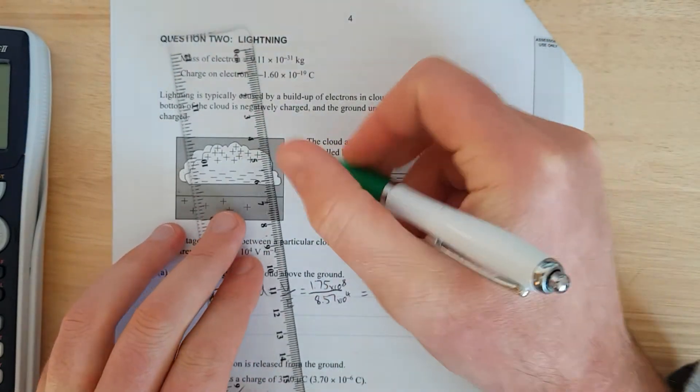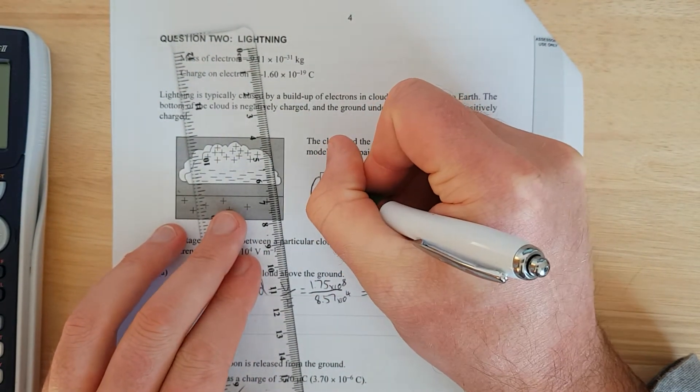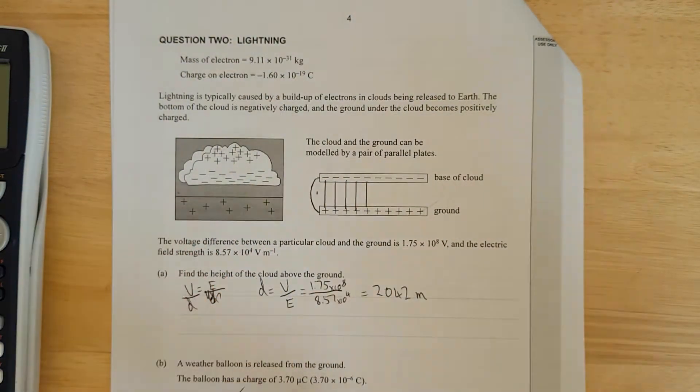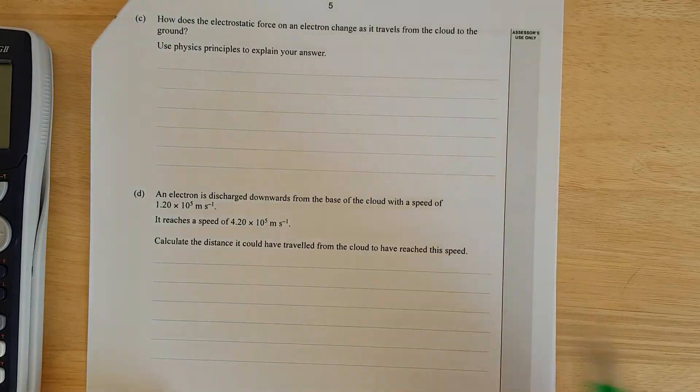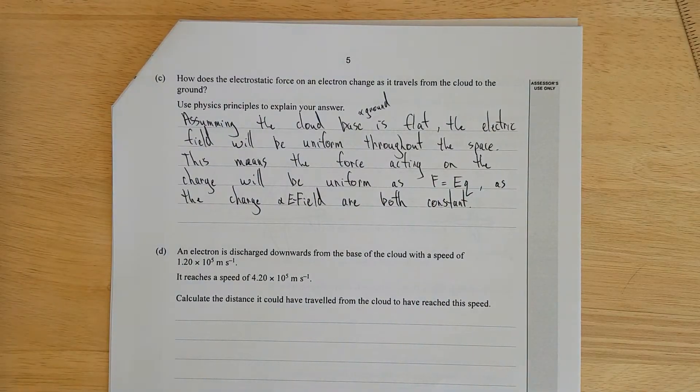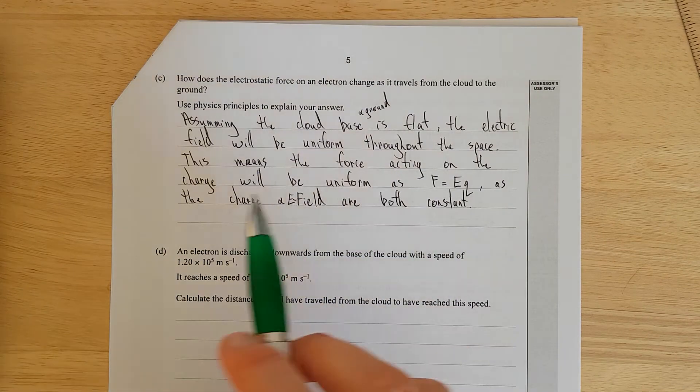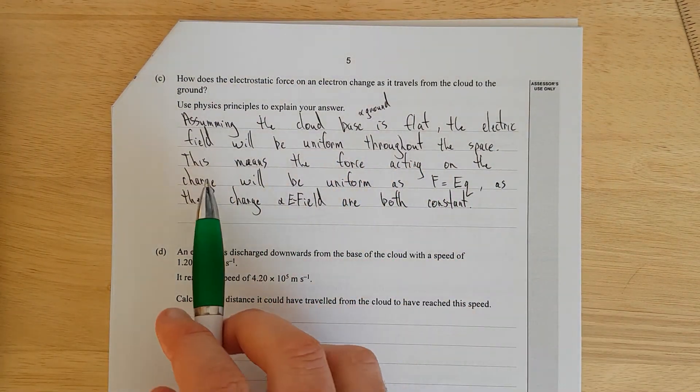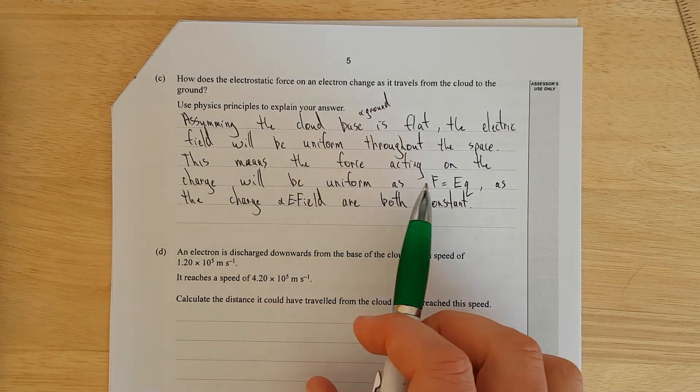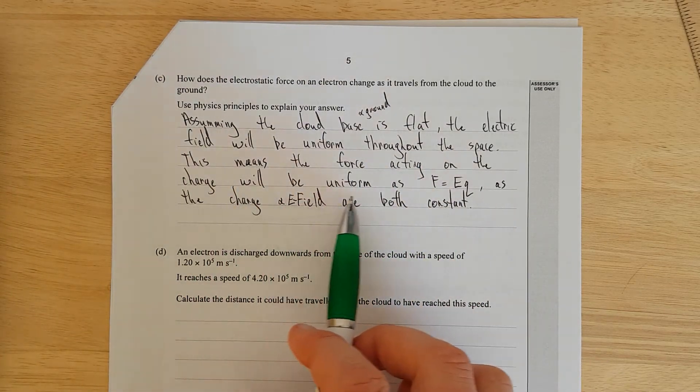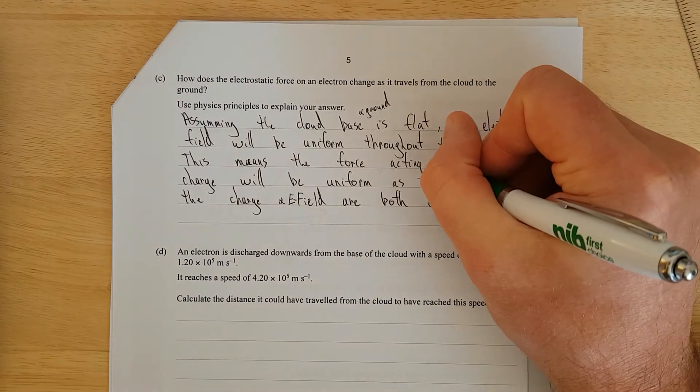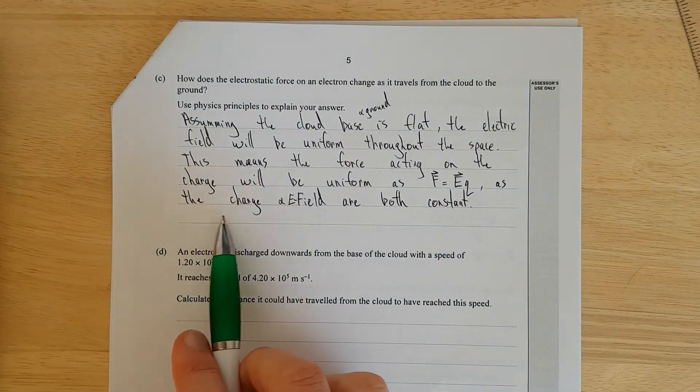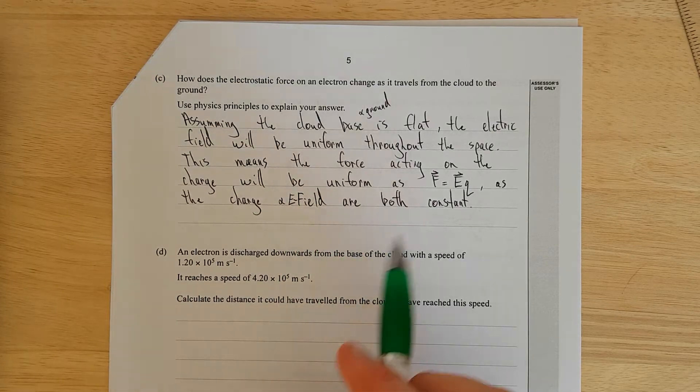All evenly spaced except for here, where in this region here the field would actually be less than anywhere where the field is uniform. I'll just pause it and then write it. I've just said, assuming the cloud base and ground is flat, the electric field will be uniform throughout the space. This means the force acting on the charge will be uniform as F equals EQ. As the charge and the E field, electric field, are both constants.